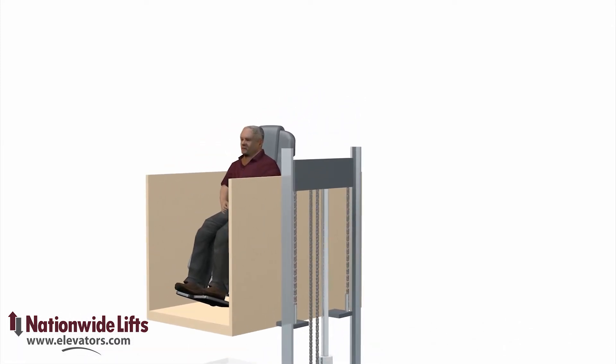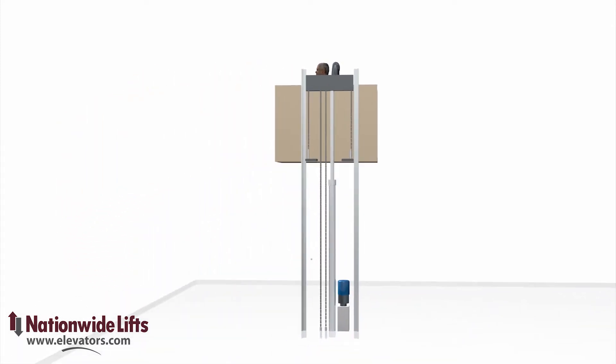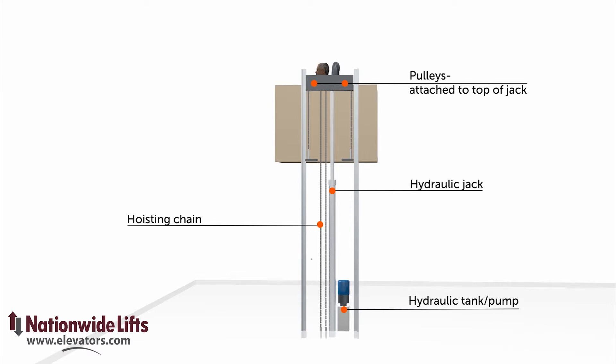Two pulleys are attached to the top of the jack. Two chains tie together the system. One end is attached to the platform, and the other end is tied to a fixed point at the base of the rails. The controller and hydraulic pump reside between the rails as well.